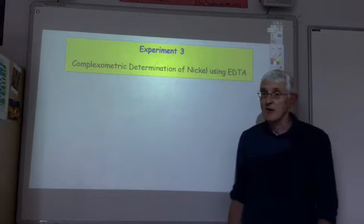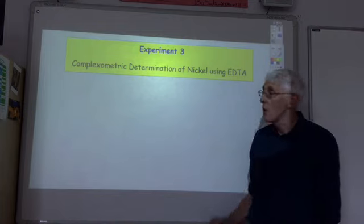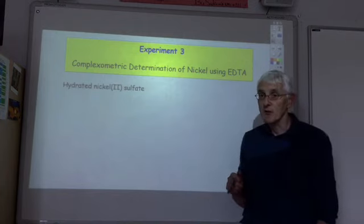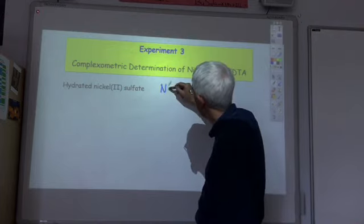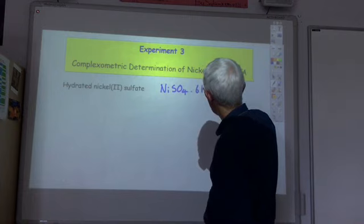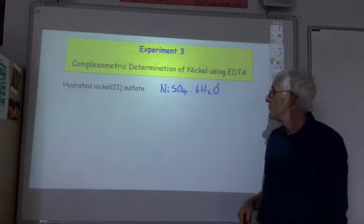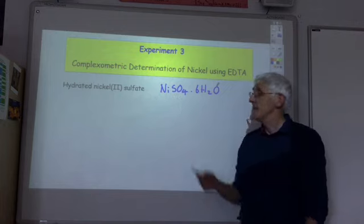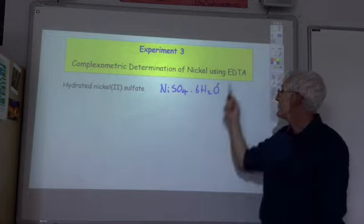In this experiment we're going to carry out the complexometric determination of nickel using EDTA. We're going to be working with hydrated nickel sulfate which has the chemical formula NiSO4·6H2O. The aim of the experiment will be to determine the percentage by mass of nickel in the salt by carrying out a titration with EDTA.